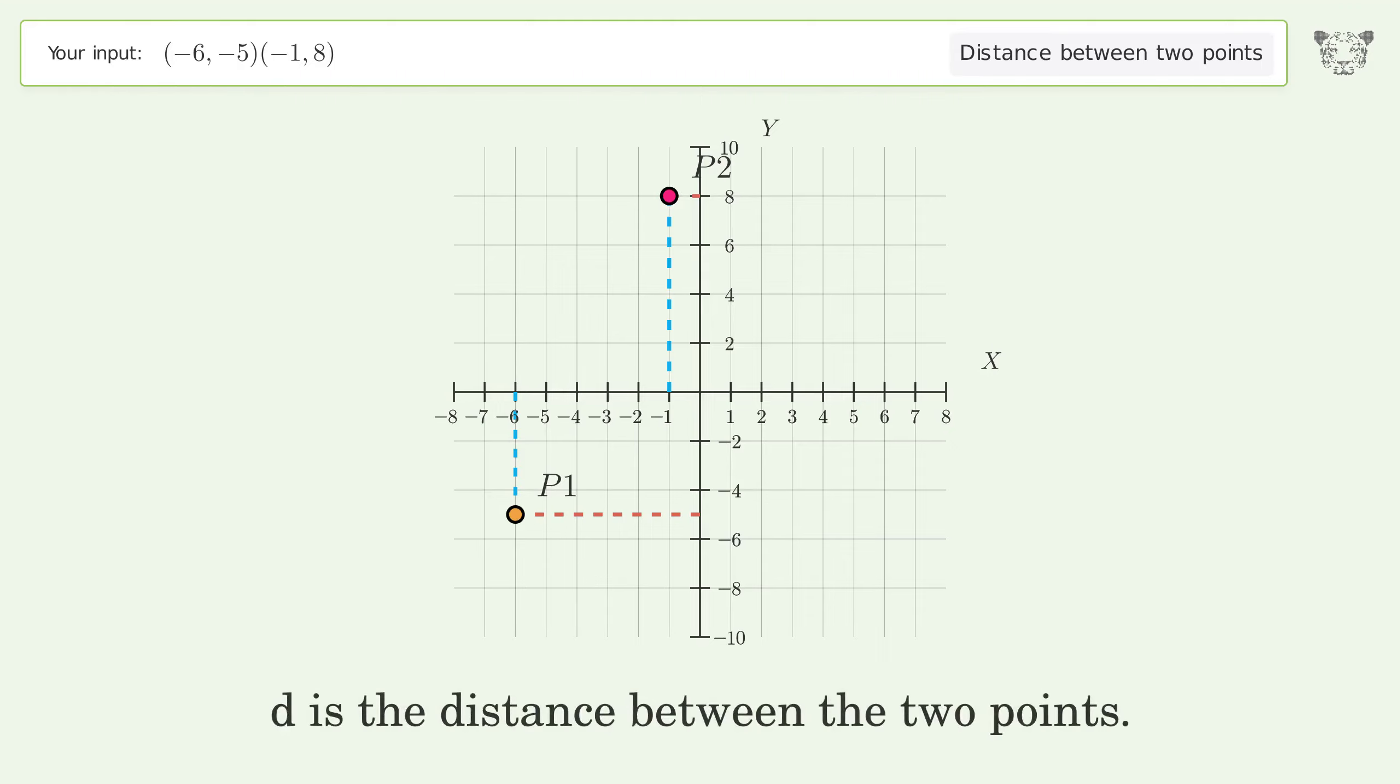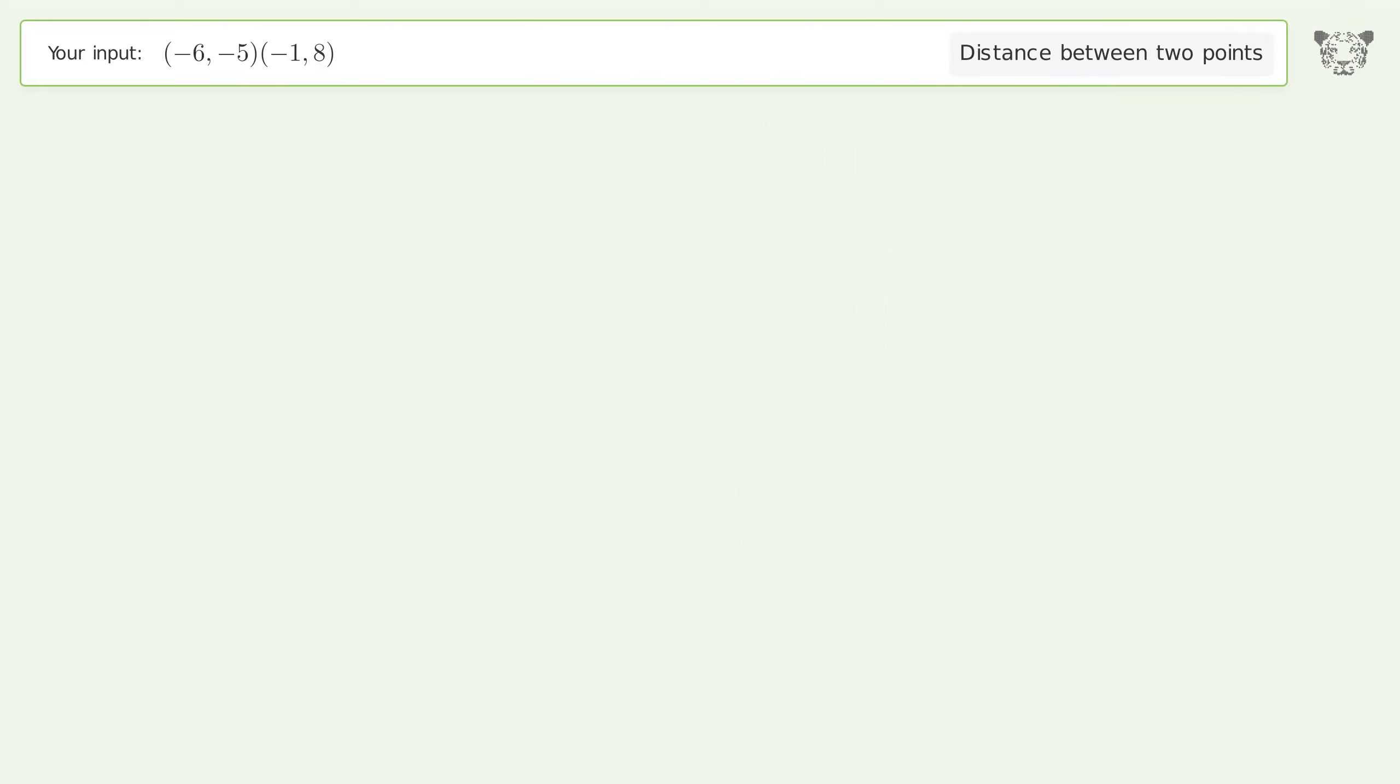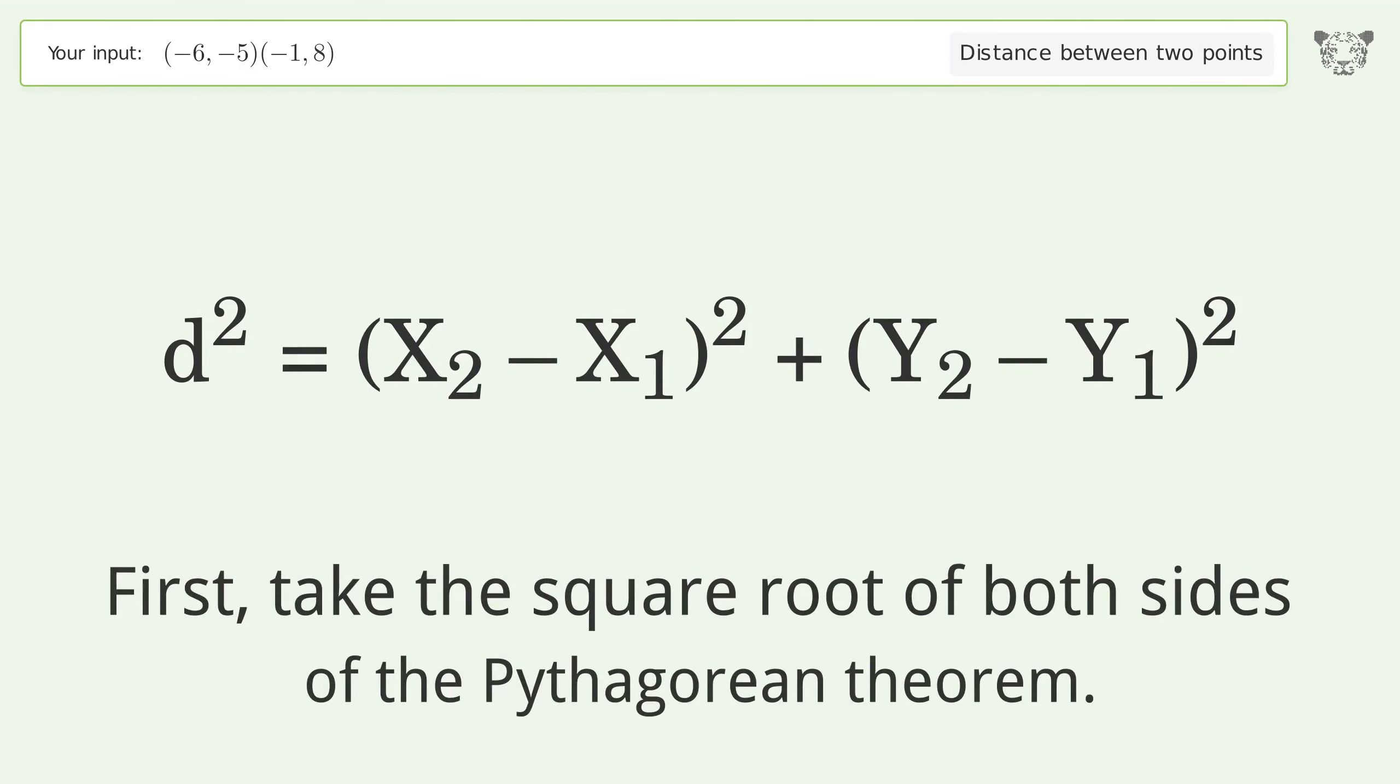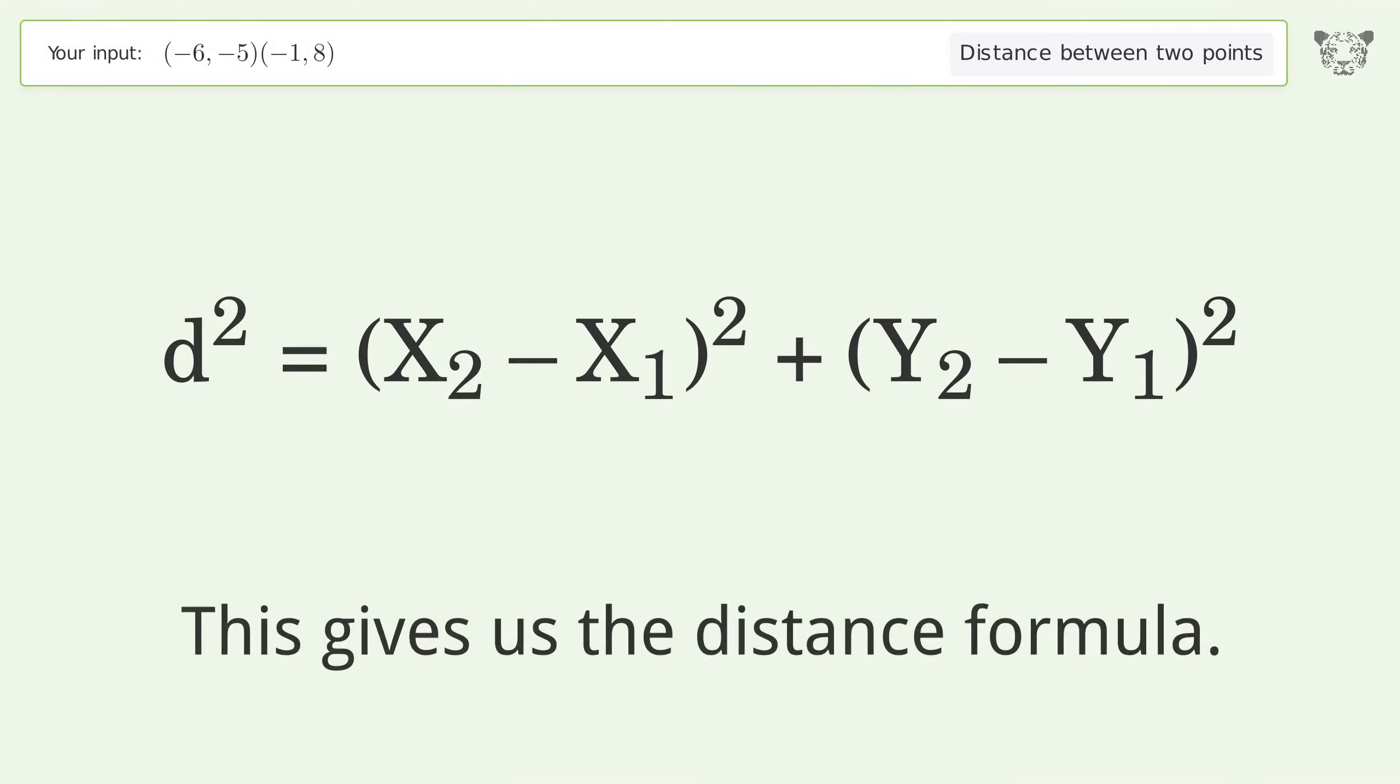d is the distance between the two points. First, take the square root of both sides of the Pythagorean theorem. This gives us the distance formula.